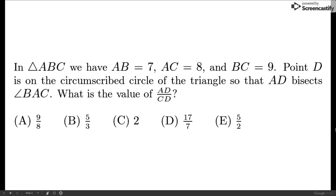So let's look at how this actually applies to an AMC problem. This states that in triangle ABC, we have AB equals 7, AC equals 8, and BC equals 9. Point D is on the circumscribed circle of the triangle such that AD bisects angle BAC. What is the value of AD over CD?